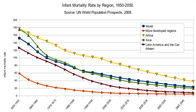Perinatal mortality is late fetal death — from 22 weeks gestation to birth — or death of a newborn up to one week postpartum. Neonatal mortality is newborn death occurring within 28 days postpartum. Neonatal death is often attributed to inadequate access to basic medical care during pregnancy and after delivery, and accounts for 40–60% of infant mortality in developing countries. Postneonatal mortality is the death of children aged 29 days to one year.